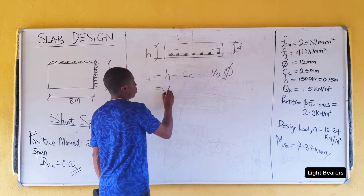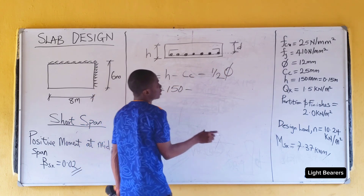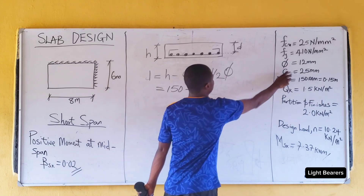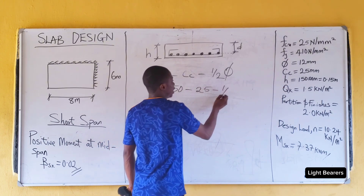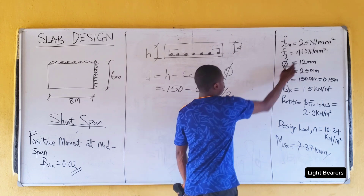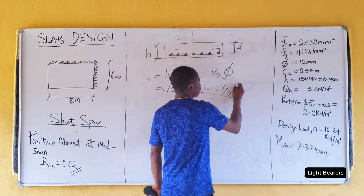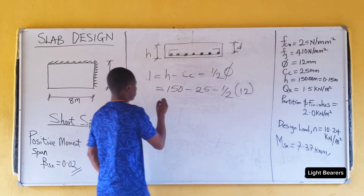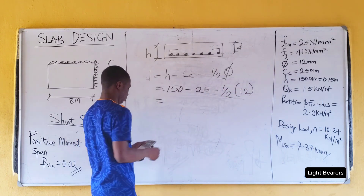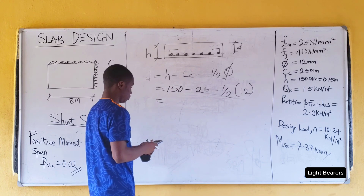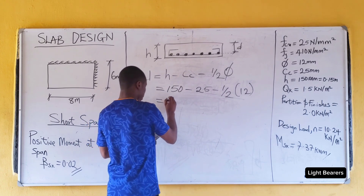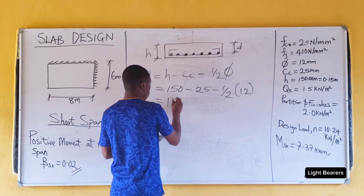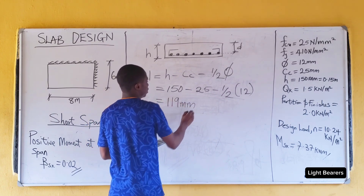So we have 150 minus — our concrete cover is 25 — minus half of the bar diameter, which is 12. So our effective depth is 119 millimeters.